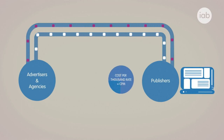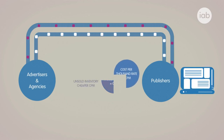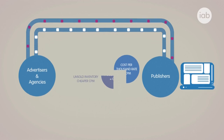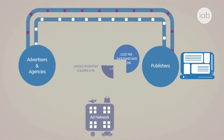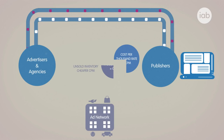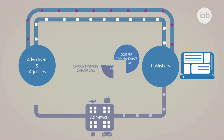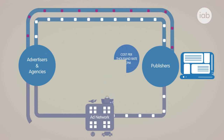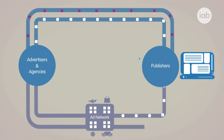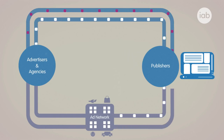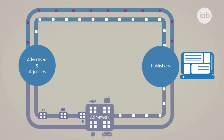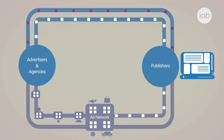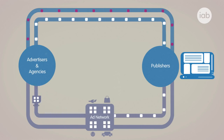Publishers who were unable to monetise all of their available inventory would sell on their remnant impressions to ad networks, who would aggregate supply from multiple publishers and sell on packaged inventory at a discounted rate. This method became known as indirect selling, with networks acting as brokers or intermediaries for publishers.